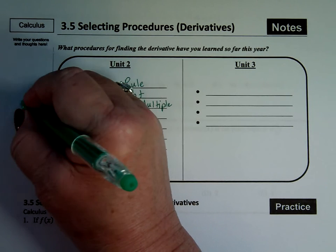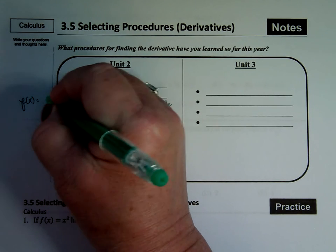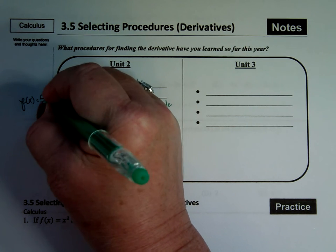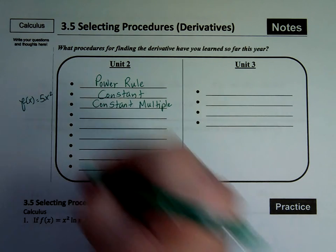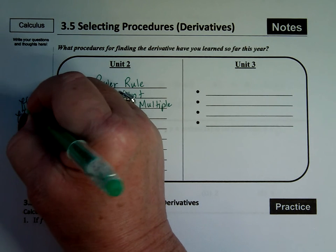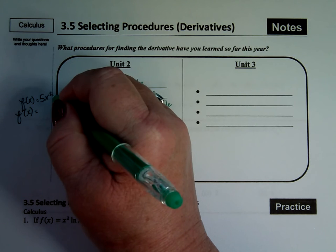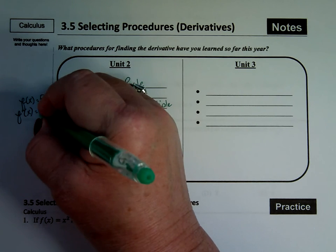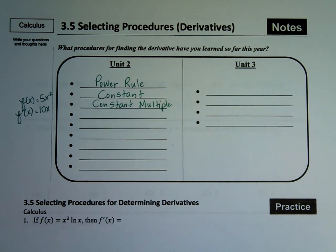There's the constant multiple rule. That's like if you had an f of x, let's say it's 5x squared, and you want to take the derivative of that. The constant stays the same. The power comes down in front, and you take the power to one less. So sometimes I have a constant in front. That's a constant multiple rule.